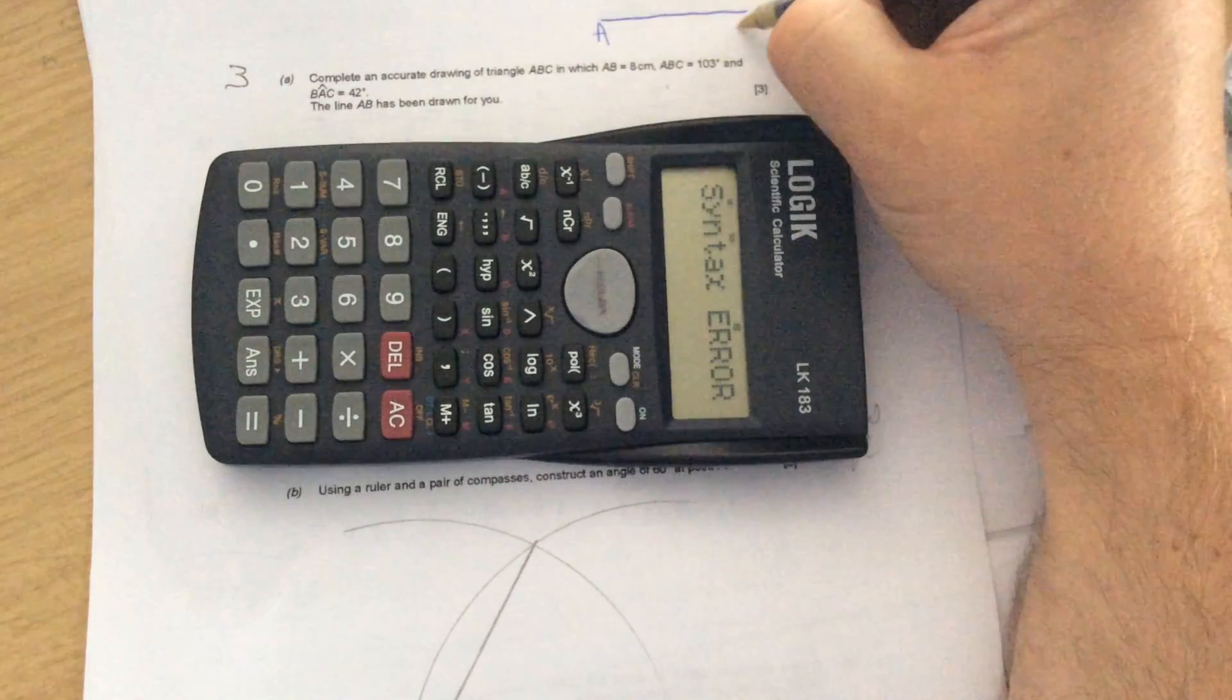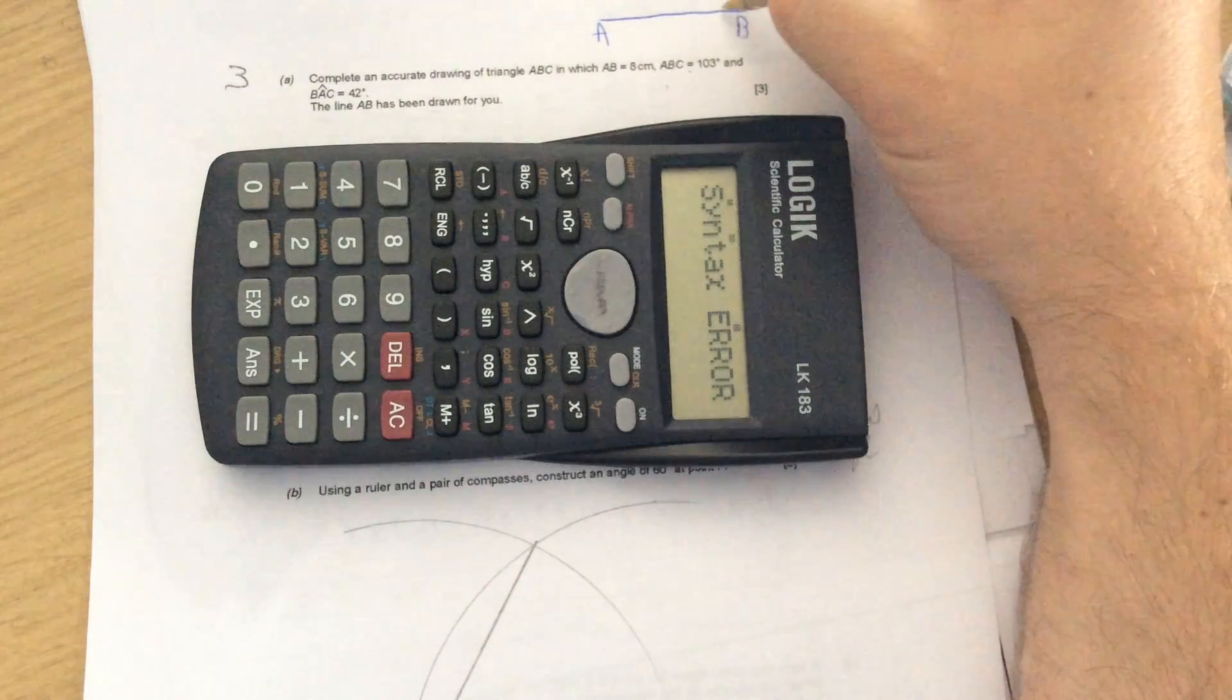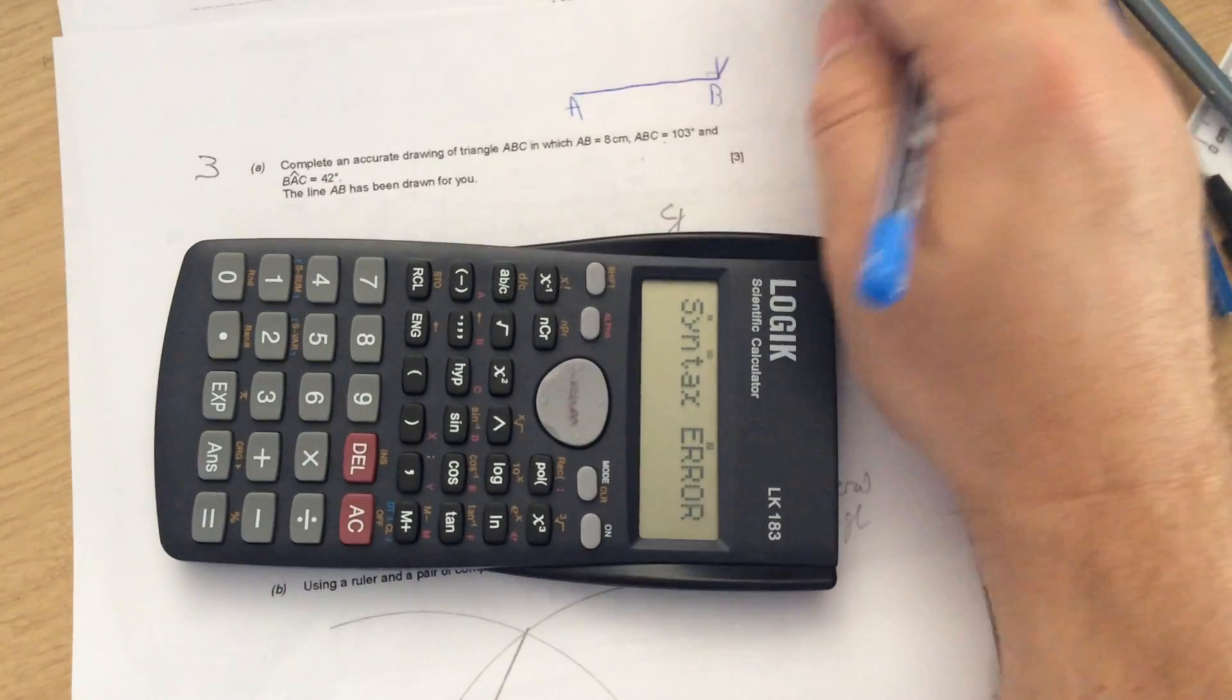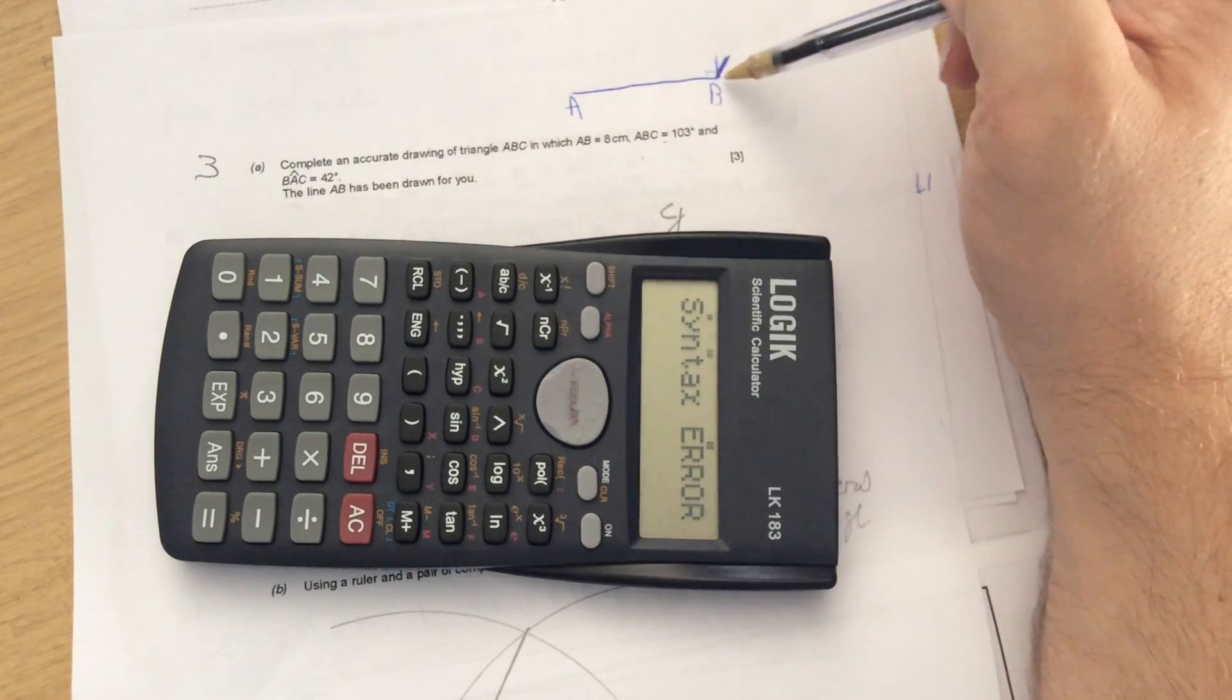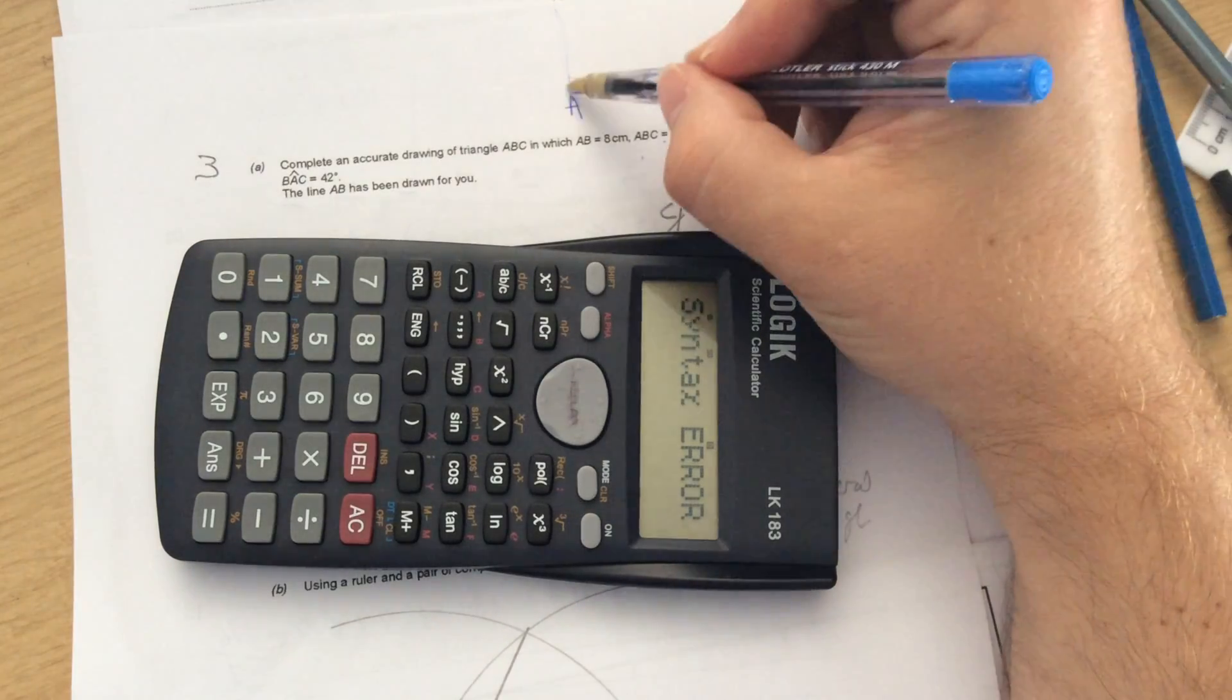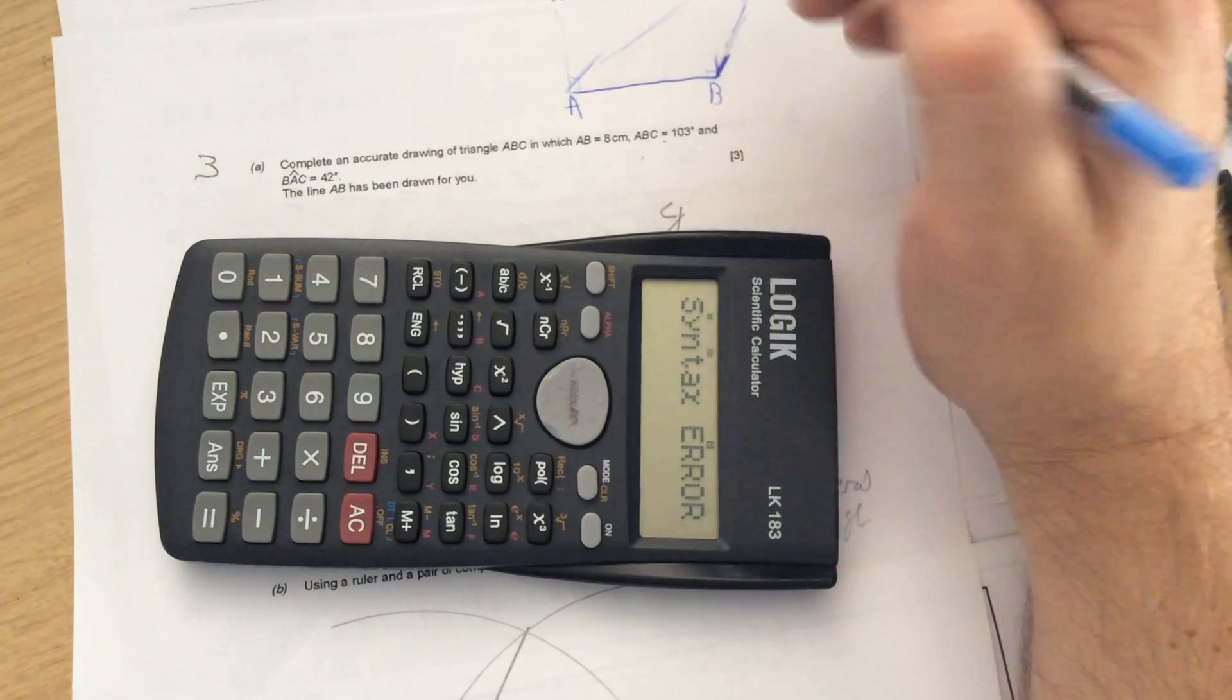If you've got a line AB to start, A to B to C means angle C is 103 degrees. So if you imagine going from 0, 90 would be a right angle, so 103 is going to be going this way somewhere. BAC means B to A to C, so it's going to be 42 degrees. Because 90 would be a right angle, 42 is going to come back. So if I was sketching the shape accurately, I would join them up until they meet.